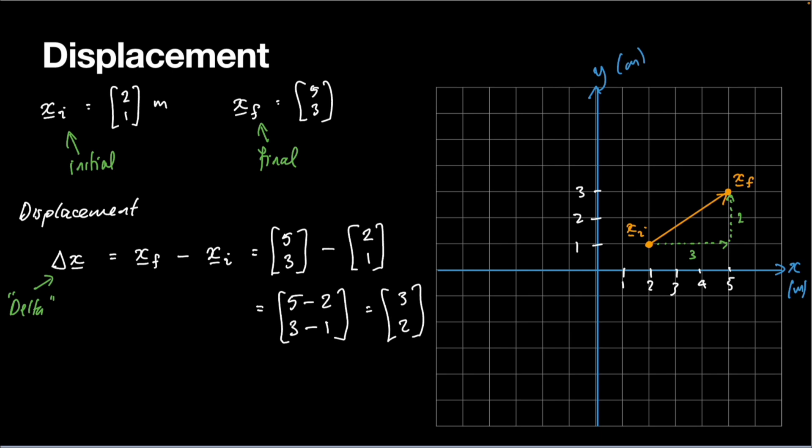So displacement is a vector. Let's just write some of this down. That's an important word. And when we say that something is a vector, it has two things going on. It has a magnitude, which is how long it is. And it has a direction, which for us is which way the arrow points.